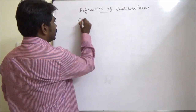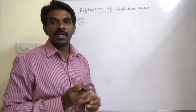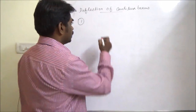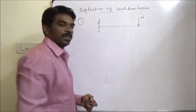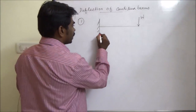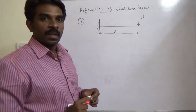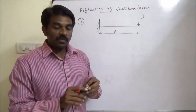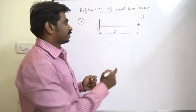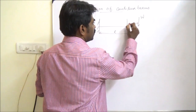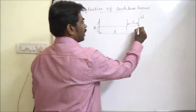First, let us take a cantilever with a point load or concentrated load W at the free end. Let the length of the cantilever be L, with fixed end A and free end B.